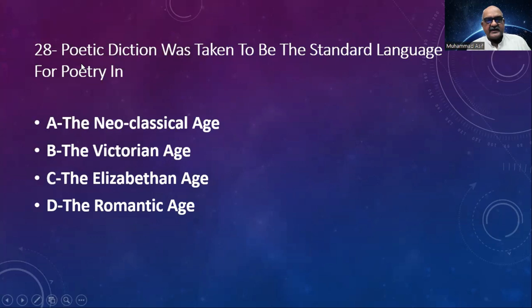Number 28: Poetic diction was taken to be the standard language for poetry in which age? Options: the Neoclassical Age, the Victorian Age, the Elizabethan Age, the Romantic Age. The correct answer is the Neoclassical Age. 'Neo' means again, 'classical' refers to the classics. So in the Neoclassical Age the rules of poetry given by the Greeks were employed again. The Neoclassical Age is synonymous with rules and regulations.